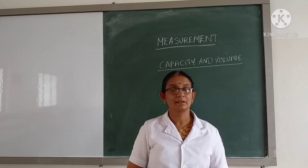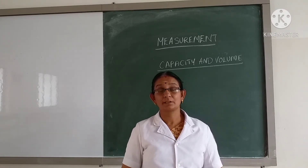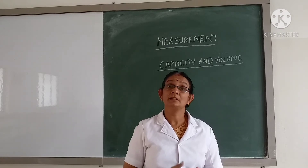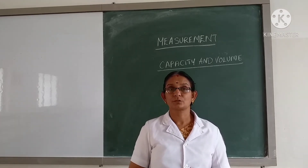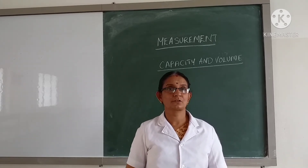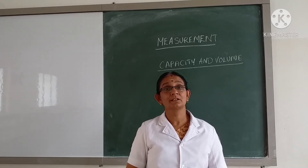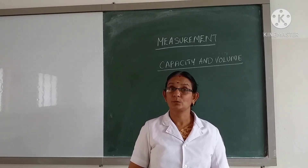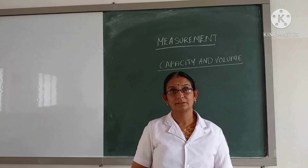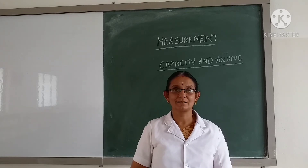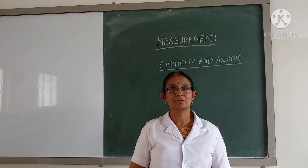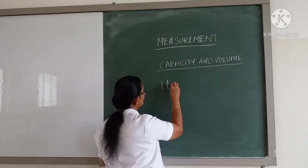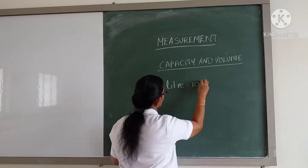Now let us learn what capacity and volume are. The quantity of a liquid is called its volume. The capacity of a container is the volume of liquid it can hold. For example, if I fill a water bottle with two glasses of water, the capacity of the water bottle is two glasses. The standard units of capacity are milliliter and liter. One liter is equal to 1000 milliliters.